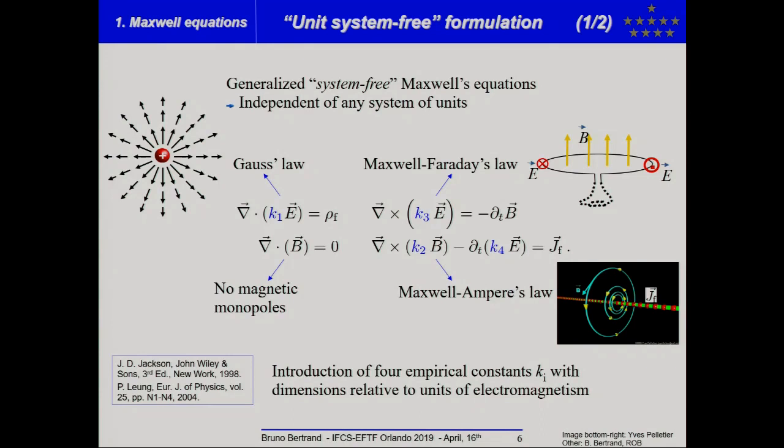I will start from something which is well-known in literature and textbooks. I will start from a generalized formulation of Maxwell equation, which is system-free, and so that aim to be independent of any system of units. And so, it requires the introduction of four empirical constants with dimensions relative to units of electromagnetism.